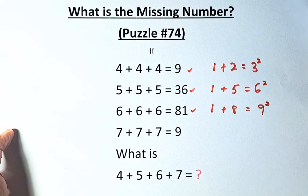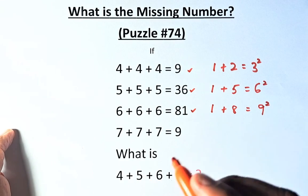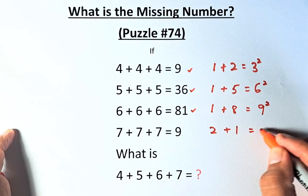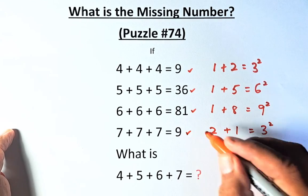So the next number will be the same. 7 plus 7 plus 7 equals 21, we have 2 and 1. We're going to add them up. 2 plus 1 is 3, and we square it to become 9.